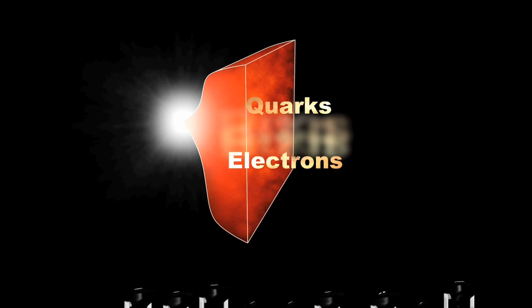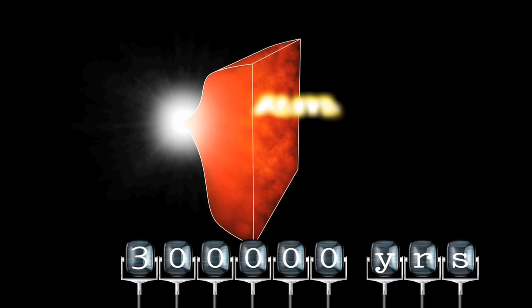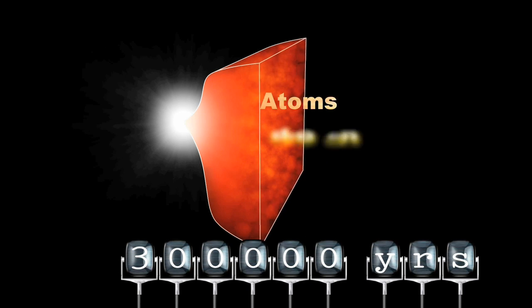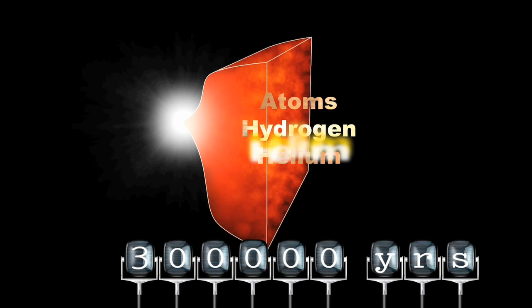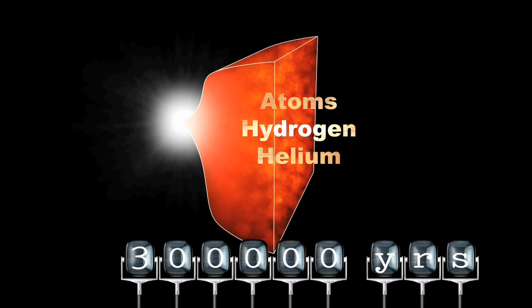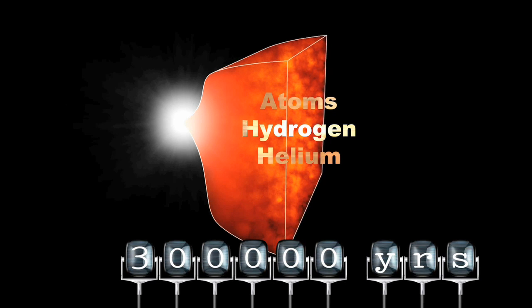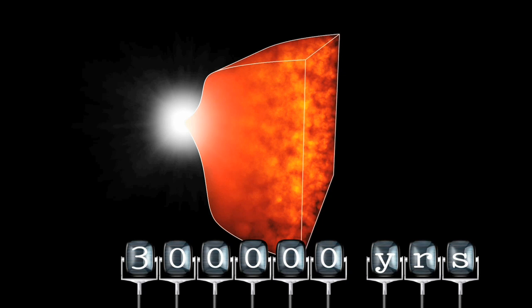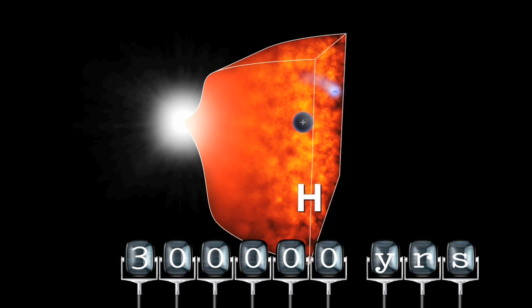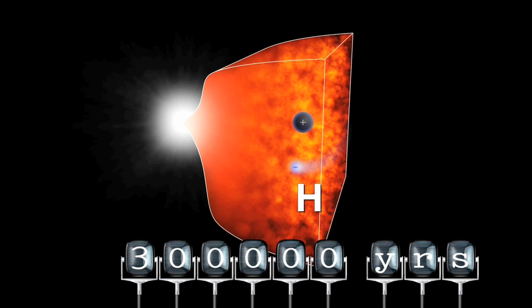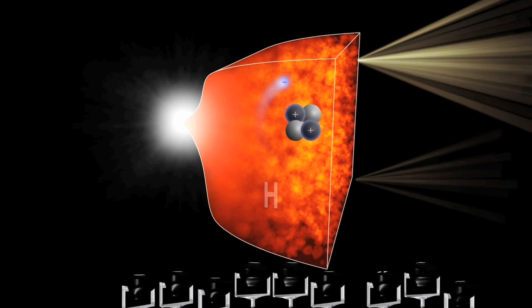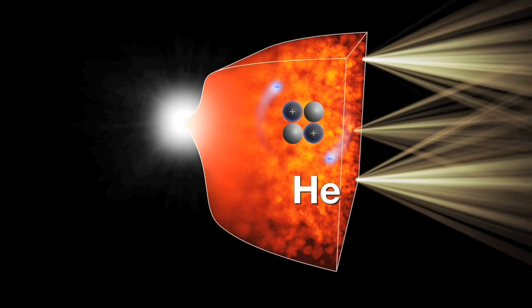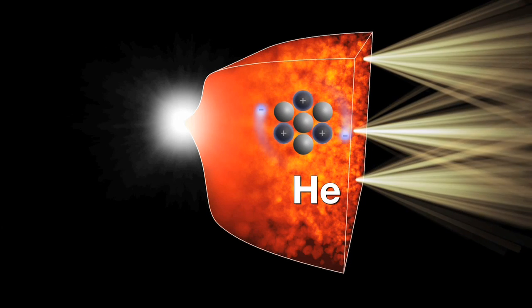After about 300,000 years, the first atoms formed, hydrogen and helium. Initially, these atoms were ionized. Photons were continually scattered by the free electrons and trapped inside the plasma. Further expansion cooled the plasma, enabling atoms to capture and bind electrons. At this time, the universe became transparent. The liberated photons were able to propagate freely in all directions.